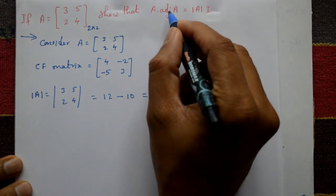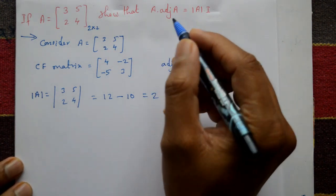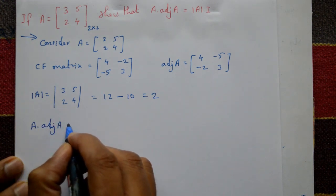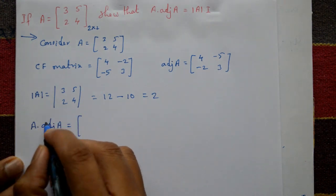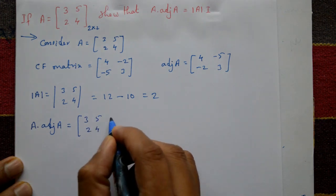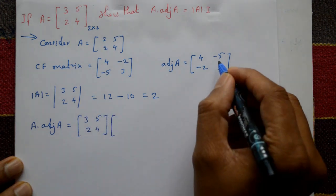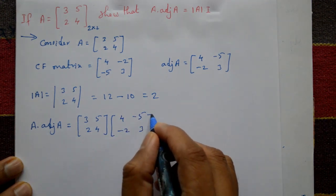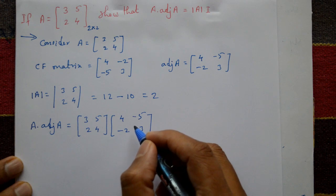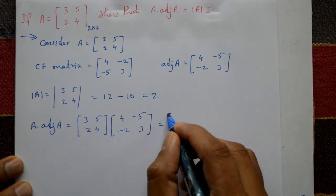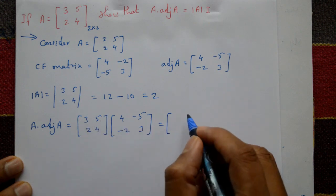Now take A into adjoint of A. A into adjoint of A is equal to, write matrix A is 3 5 2 4 into adjoint of A is 4 minus 5 minus 2 3. You know the multiplication of two matrices, row into column.